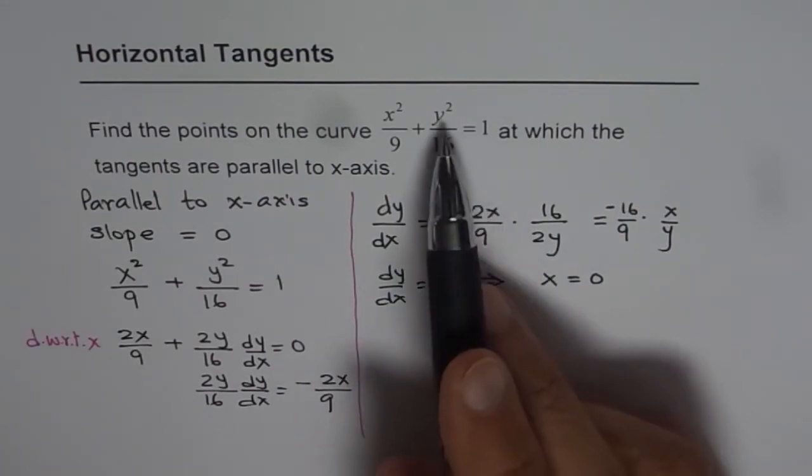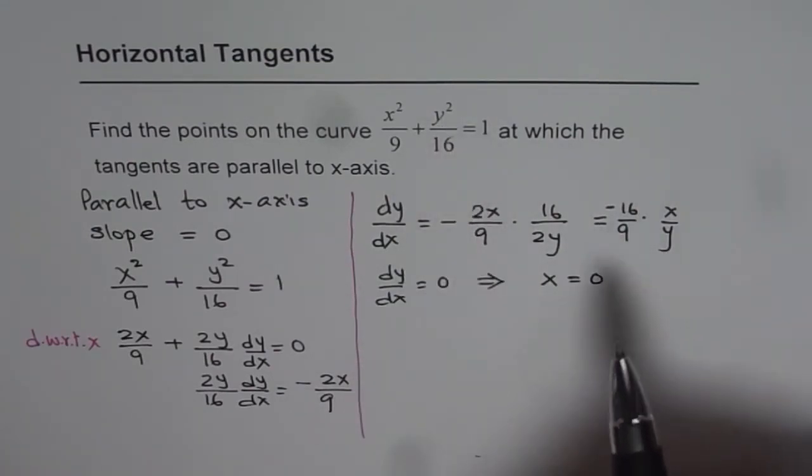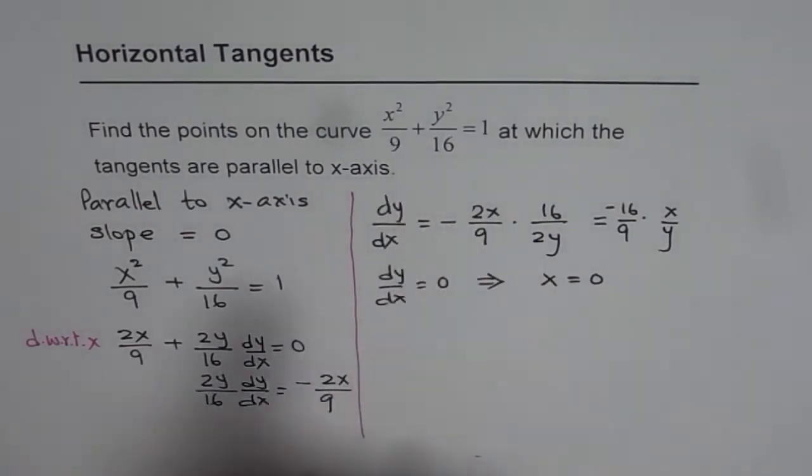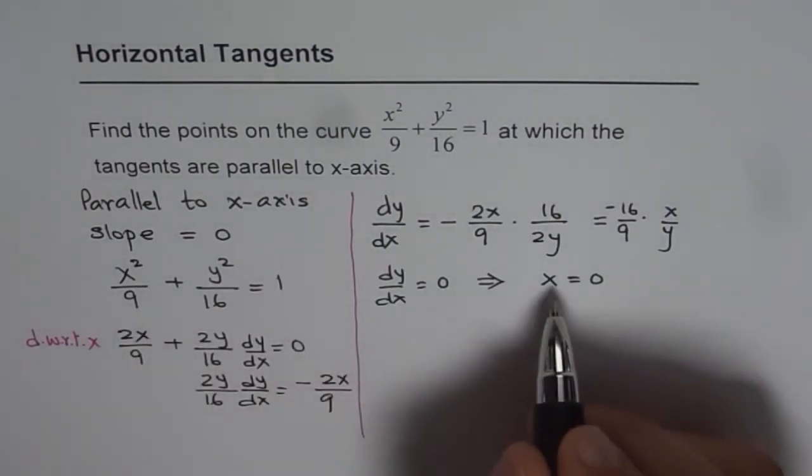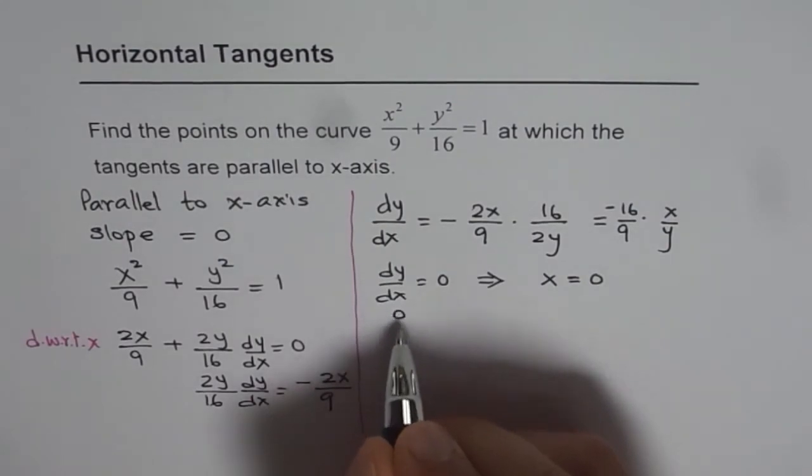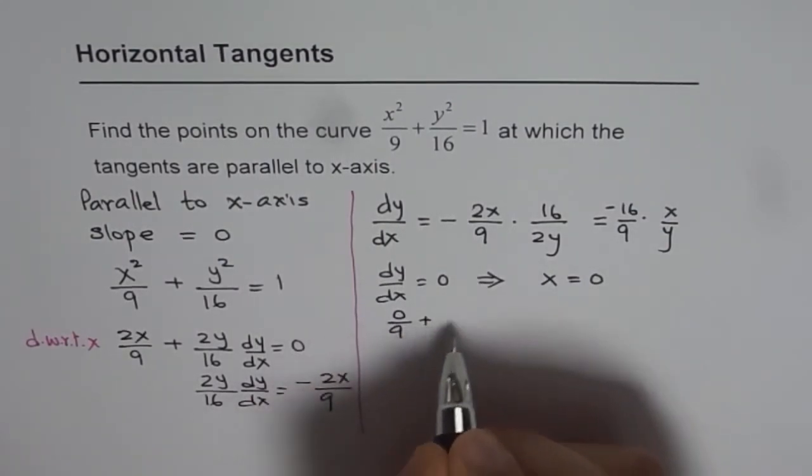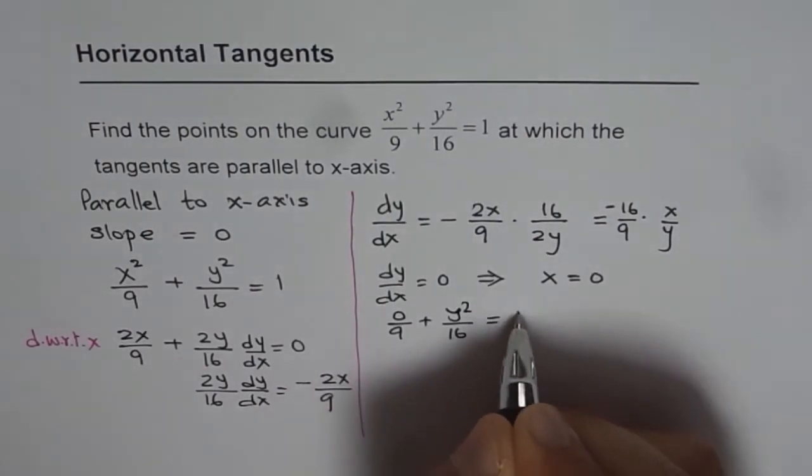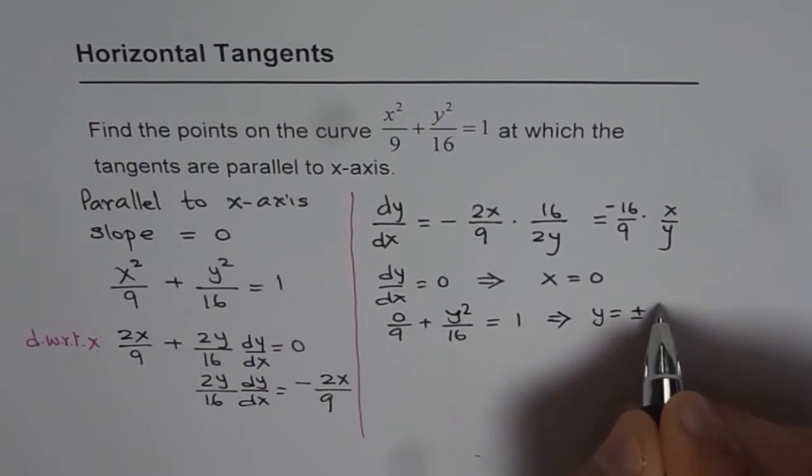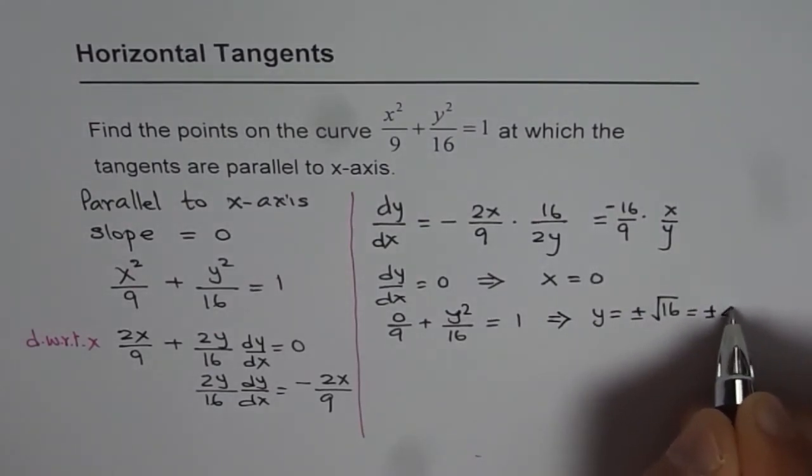So that's a point where x = 0. Now if x is 0, what is y? For that let's substitute x = 0 in the equation itself, x²/9 + y²/16. If x = 0, then we get 0/9 + y²/16 = 1, and that gives us y = ±√16 which is ±4.